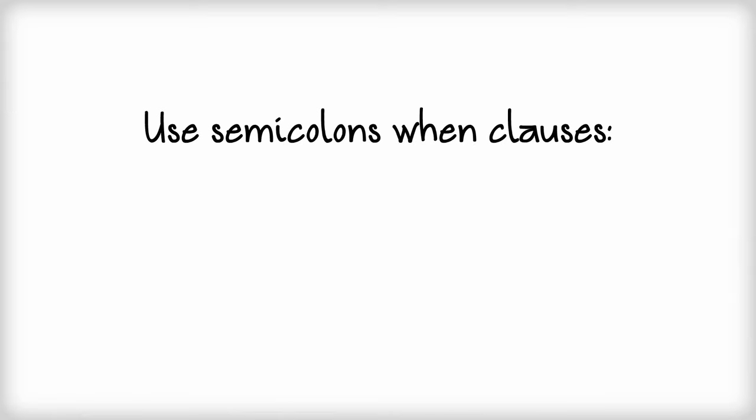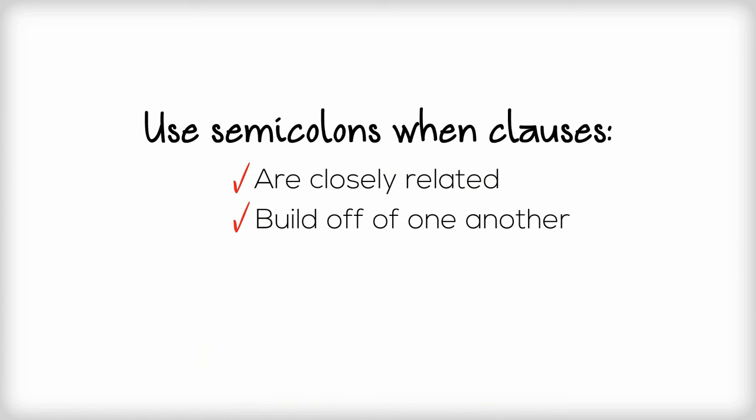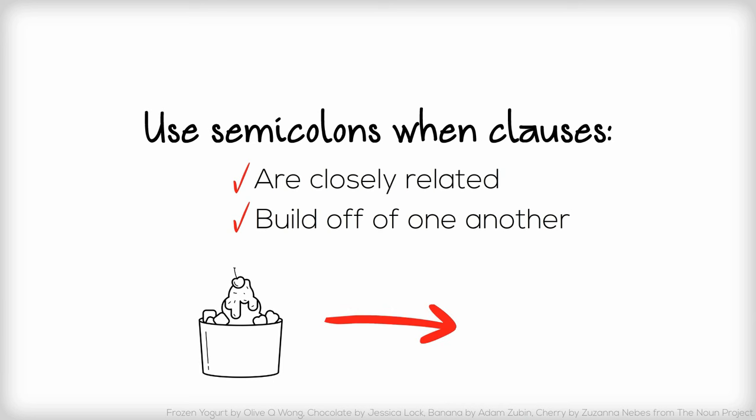Semicolons are best used when the two independent clauses are closely related, or build off of one another. In this sentence, we start by talking about ice cream sundaes, and then build off of it by talking about specific toppings.